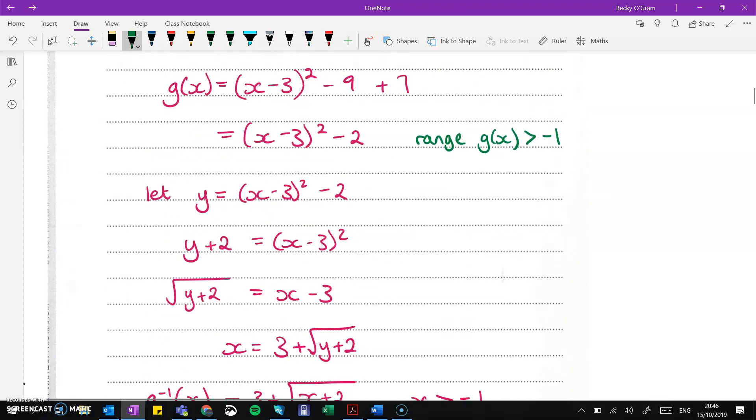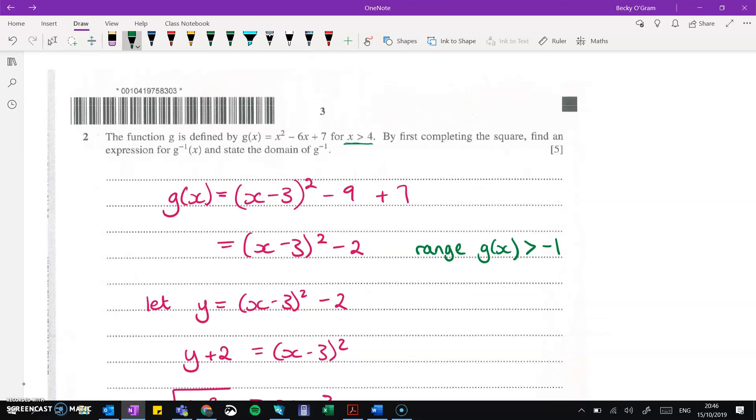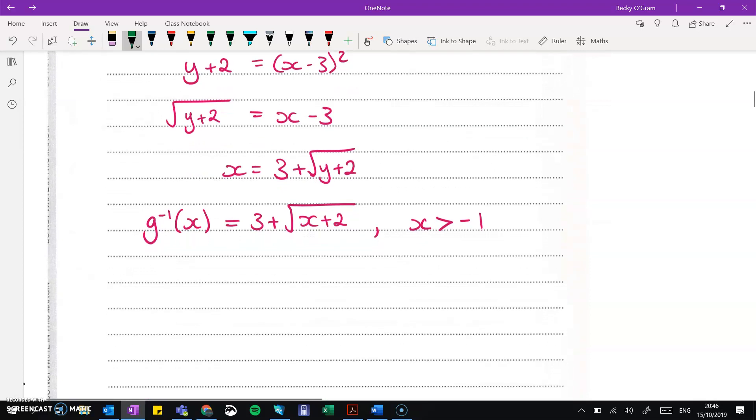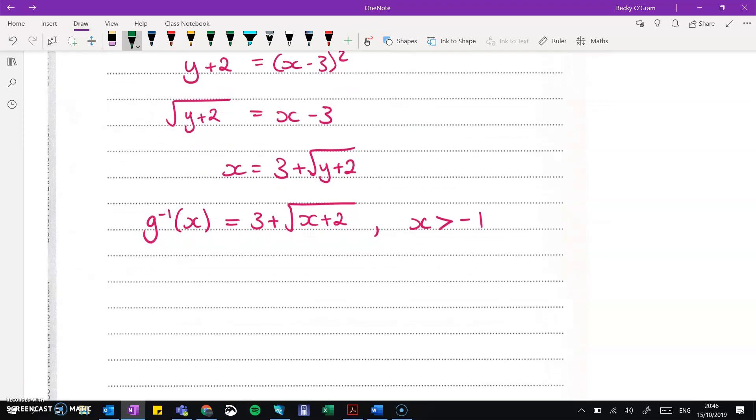So then we've got g inverse is going to be 3 plus the square root of (x + 2) that we just worked out. We also are specifically told to make sure we state the domain of that function. The domain is what can go into the function. If it's the inverse, that is everything that can come out of the original function. So that's the range of g. The range of g, we can tell from here if the smallest that x could be is 4. If we put 4 in, we get -1. So g(x) will always be bigger than -1. And that becomes the domain of our inverse function.